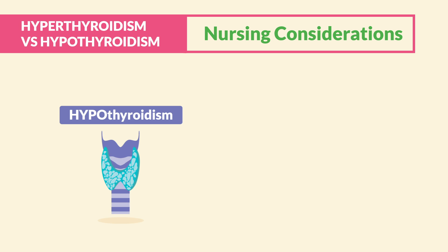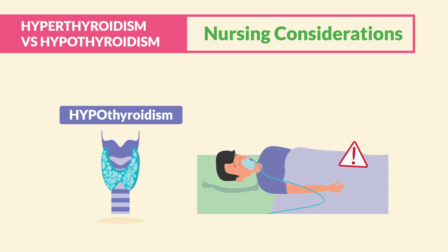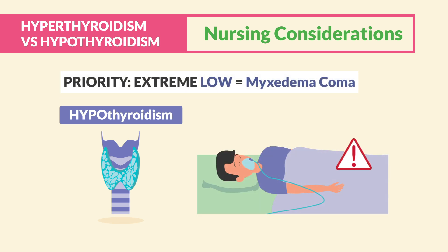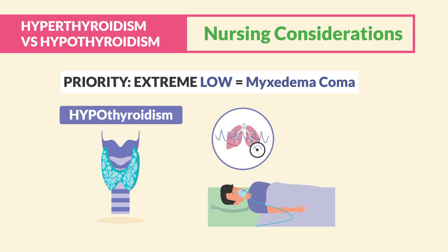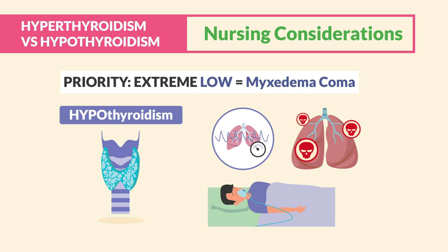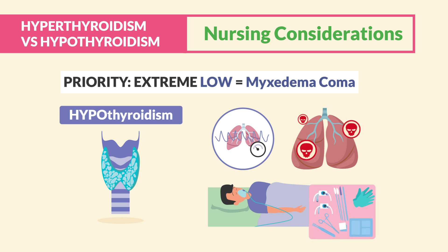For hypothyroidism, the safety consideration is to watch out for extreme lows with hypo. This is known as myxedema coma. We see low respiratory rate, which is a major risk for respiratory failure and can kill the client — be sure to write this down. We have to make sure that we have a trach kit at bedside.